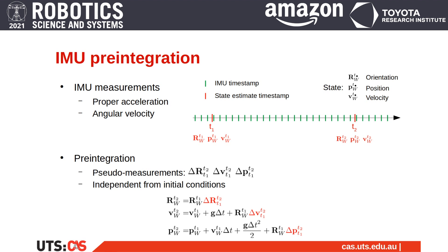Pre-integration is a concept introduced in 2009 by Lupton and Soukarié that corresponds to the combination of IMU measurements into pseudo-measurements noted delta R, delta V, and delta P. The pre-integrated measurements are independent from the initial conditions and therefore allow for efficient optimization-based state estimation of inertial-aided navigation systems.